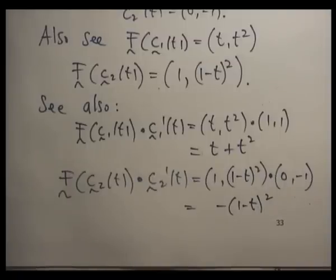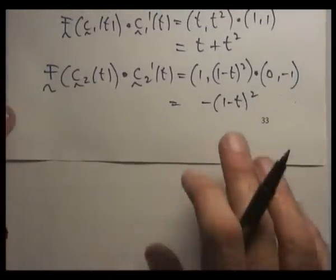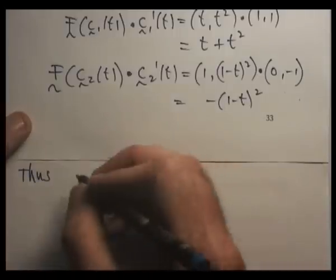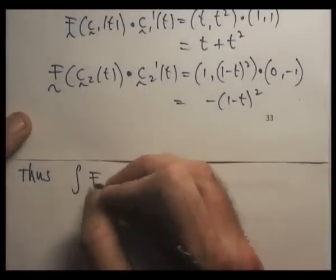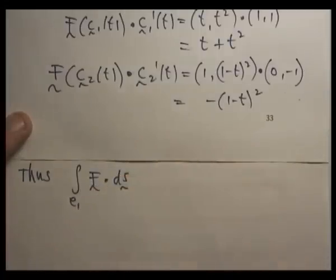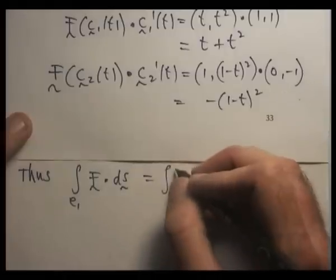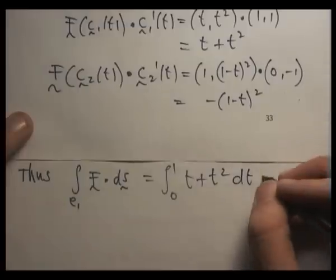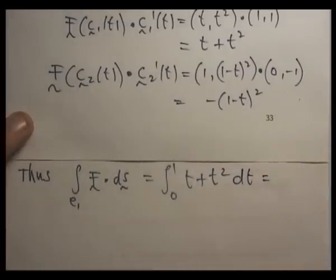So all we need to do now is take the two integrals. So this integral will be the integral from 0 to 1 of (t + t²)dt. So it's going to be something like 5 sixths.